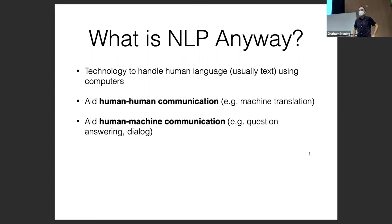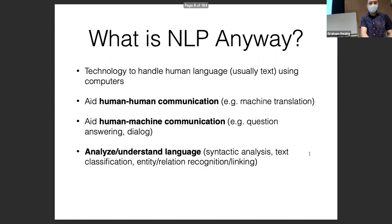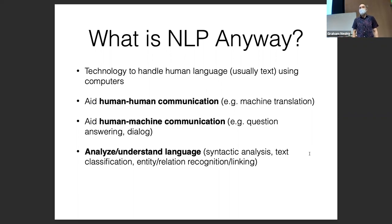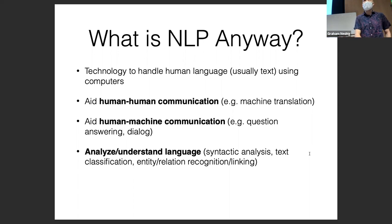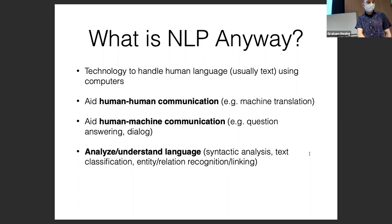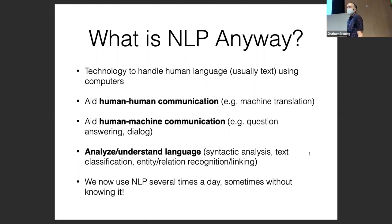Another thing is aiding human-machine communication, such as through question answering or dialogue systems — you interact with these probably a lot when you do web search. Another thing is analyzing or understanding language, doing things like syntactic analysis, text classification, entity or relation recognition and linking. These turn unstructured language into structured representations for use in downstream tasks. Usually text analysis isn't the final goal; it's about turning language into a machine-readable format. And now in our daily life we use NLP systems many, many times a day.